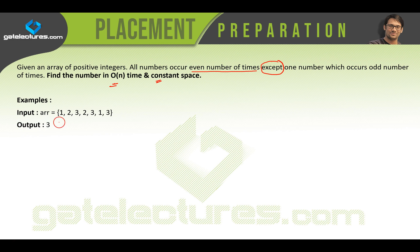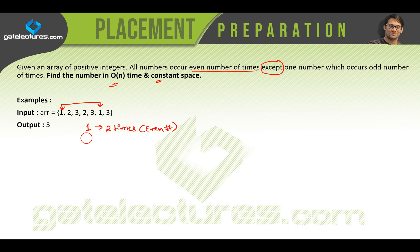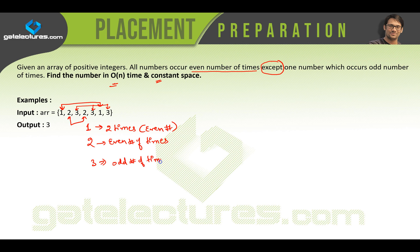Let us look at an example array. In this array we have numbers 1, 2, and 3. The number 1 is occurring 2 times, which is an even number of times. The number 2 is also occurring an even number of times. Then we have the number 3 which is occurring here, here, and here — so it is occurring an odd number of times. We need to find the number which occurs an odd number of times. That is exactly the problem.